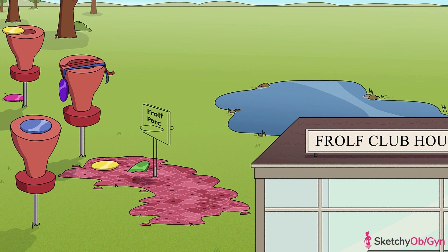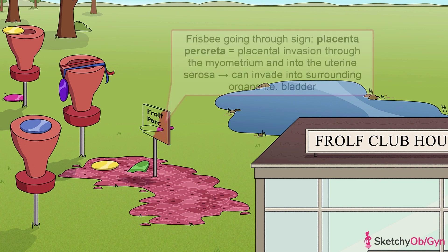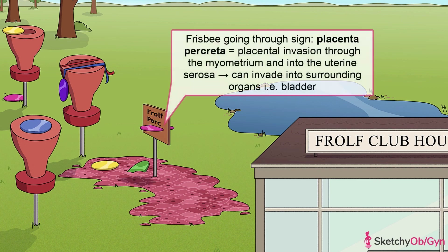Placenta percreta is when the placenta grows through the uterine serosa, just like this pink frisbee is going through this sign — hope whoever threw that yelled 'fore!' Oftentimes the placenta will invade into surrounding structures such as the bladder.